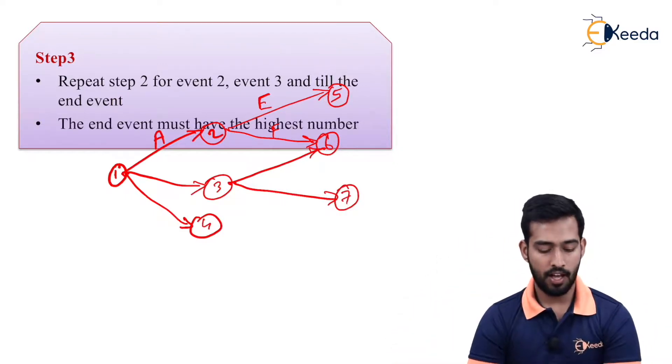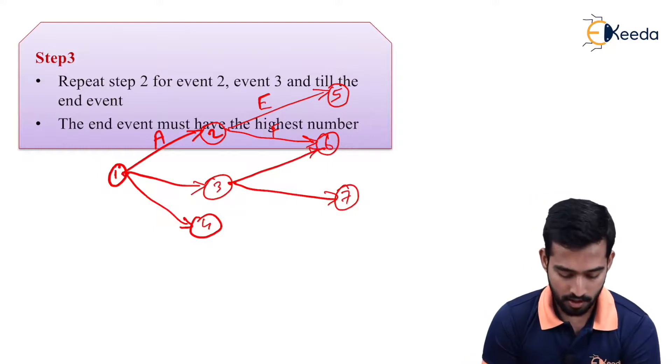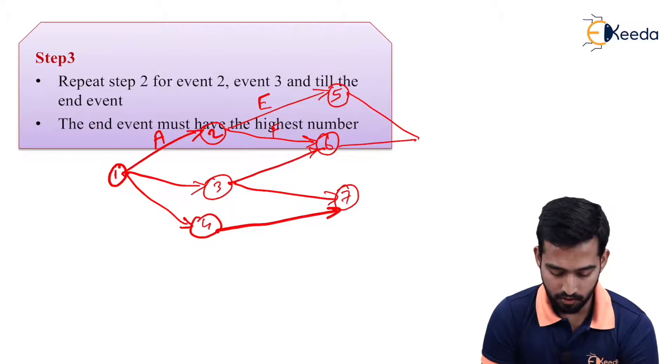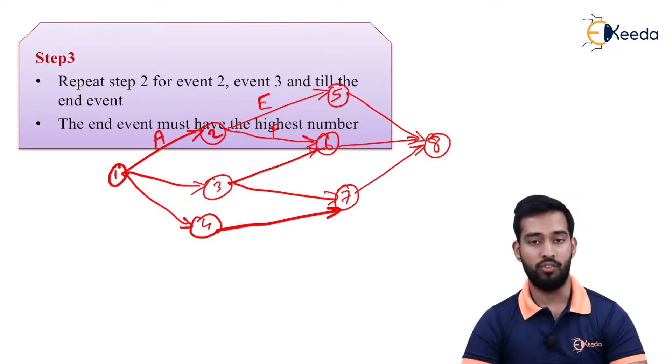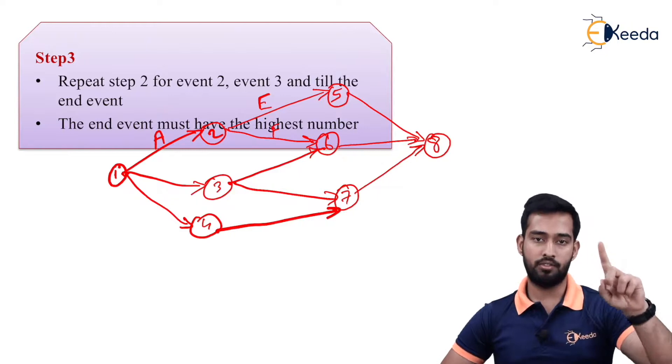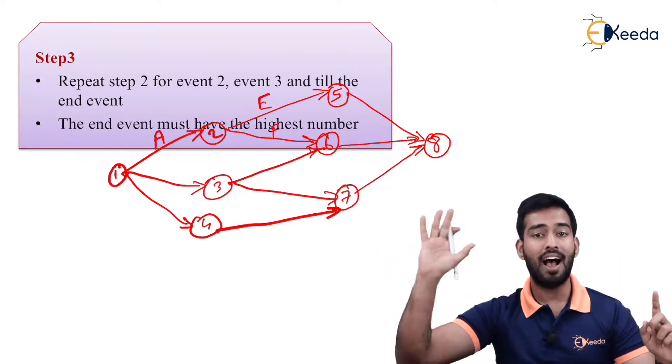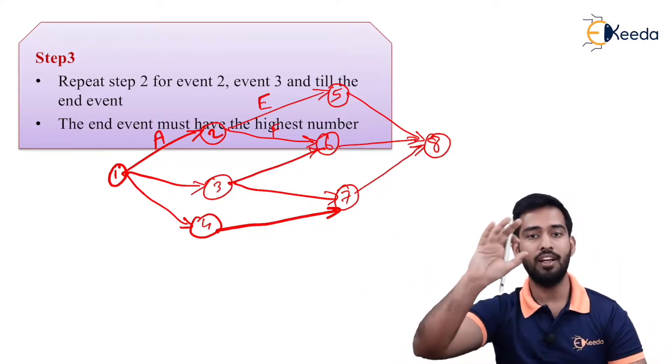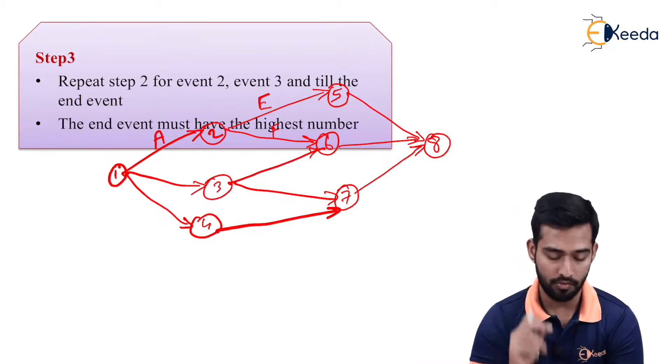The end must have the highest number. After this, a network will end at a node or an event, that is, end event, and it should have a higher number always. So keep in mind that the starting point will be given number as one, and the ending point will have the highest number. This is numbering of your events.